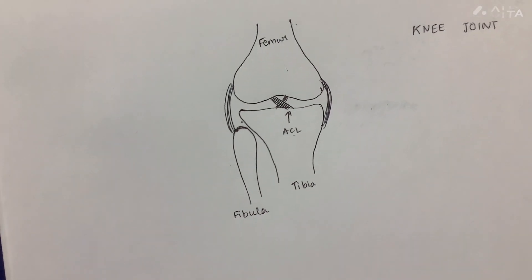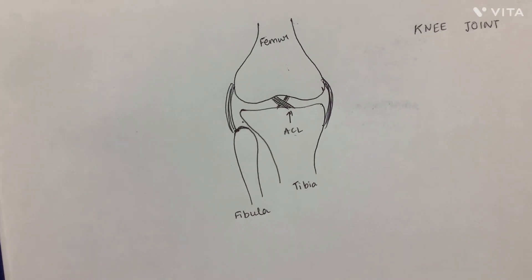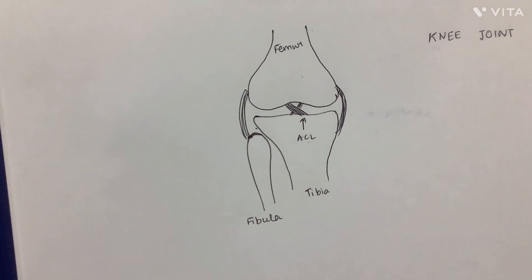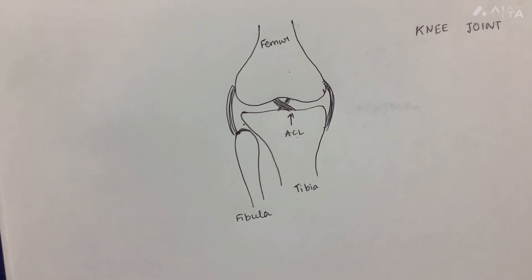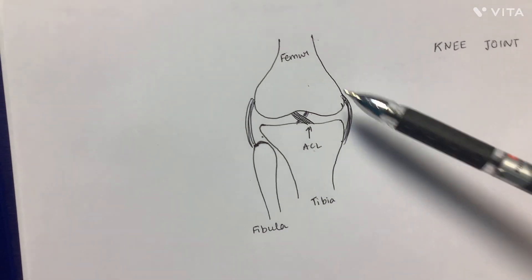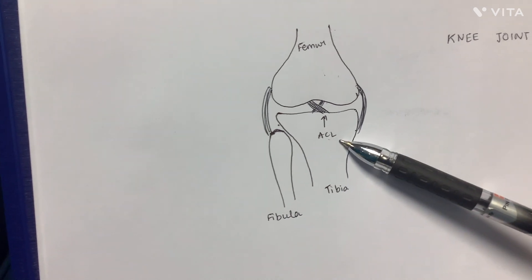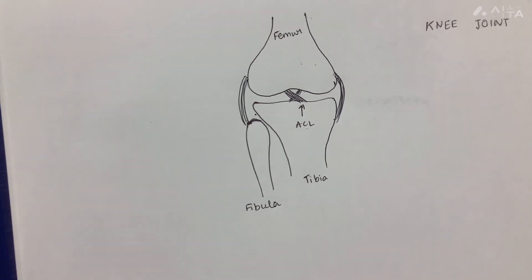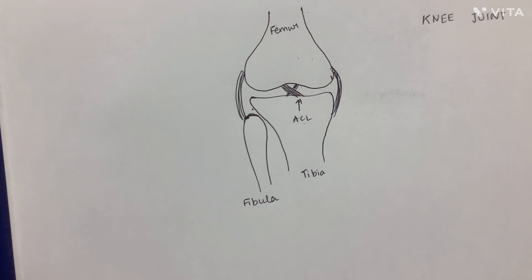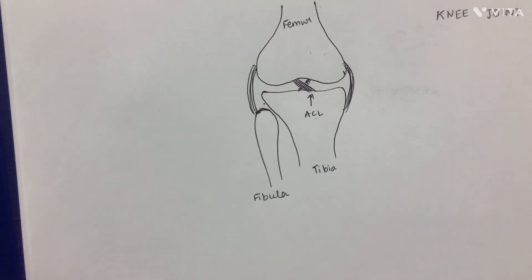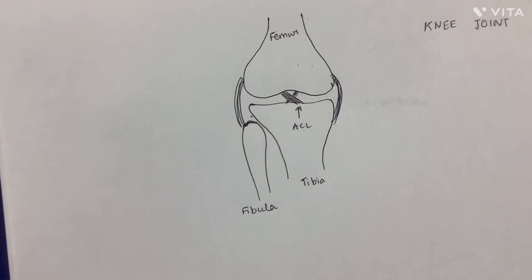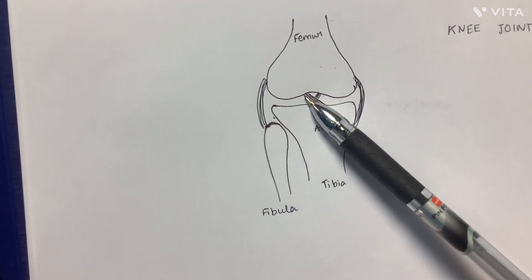Today we'll be looking at the injury of the ACL. It is a tear or sprain of the anterior cruciate ligament, which is a strong connective tissue holding the thigh bone to the shin bone. An injury to the ACL results in rapid swelling of the knee, a feeling of instability or giving way with weight bearing, and severe pain.